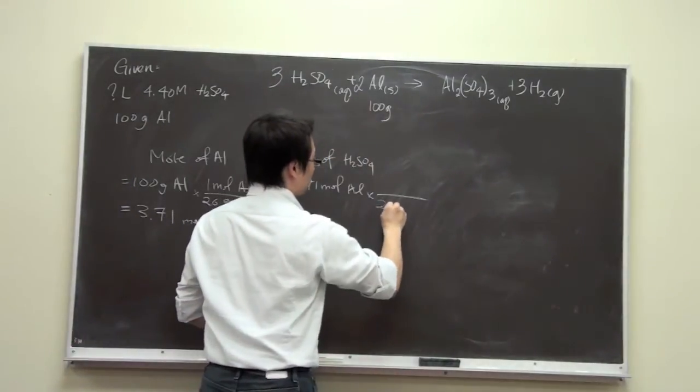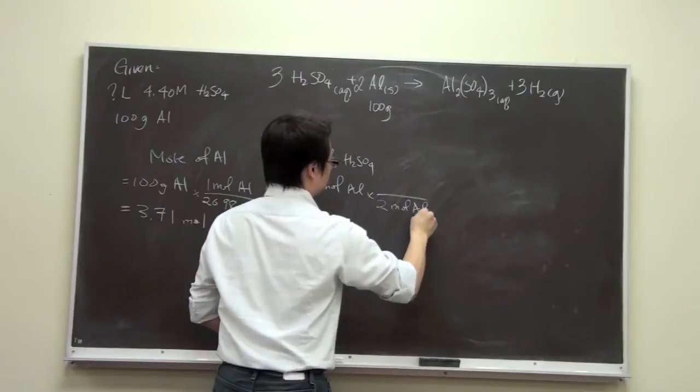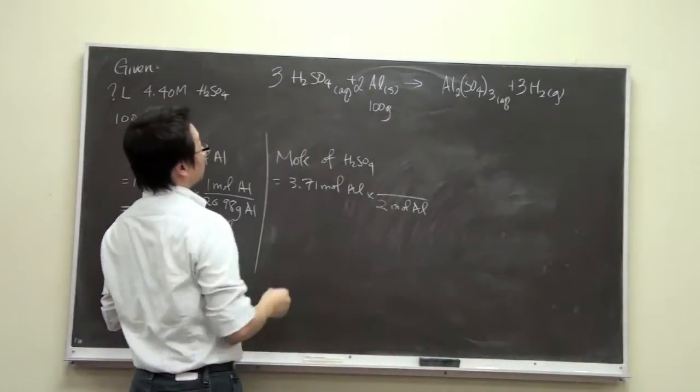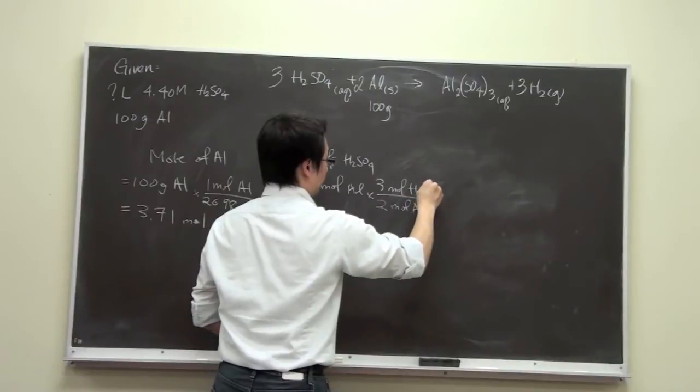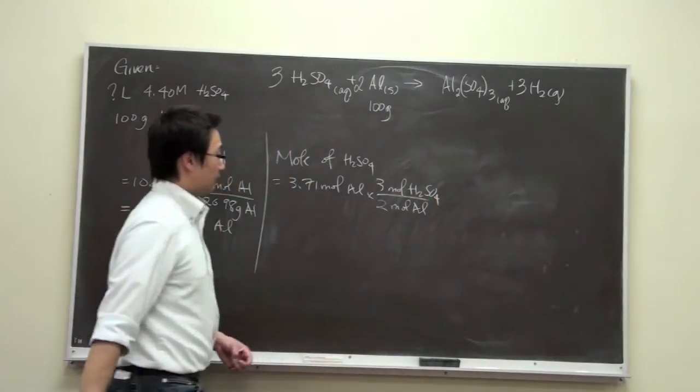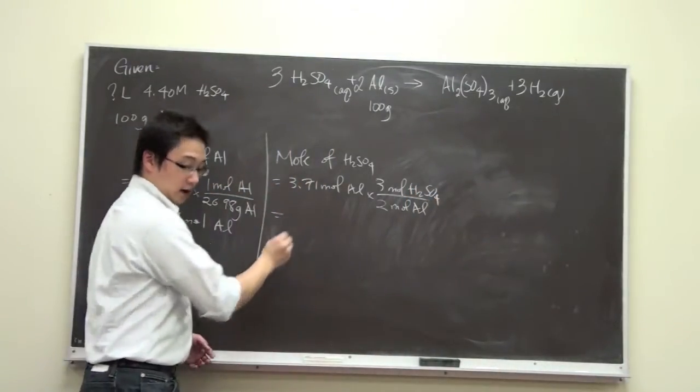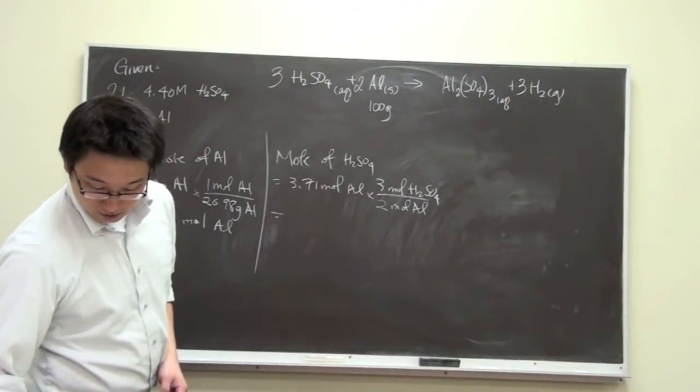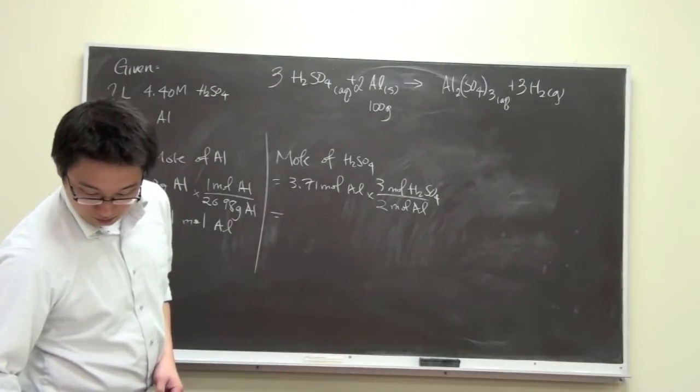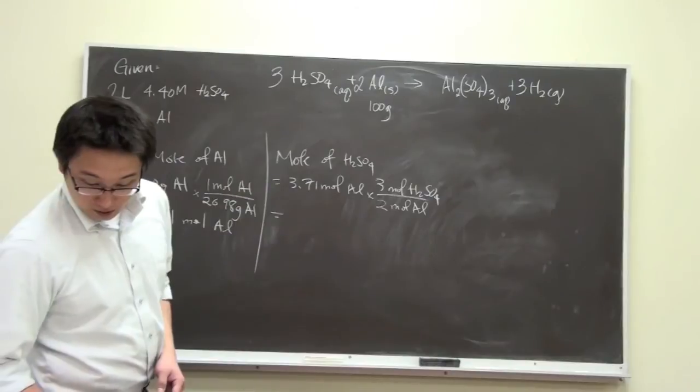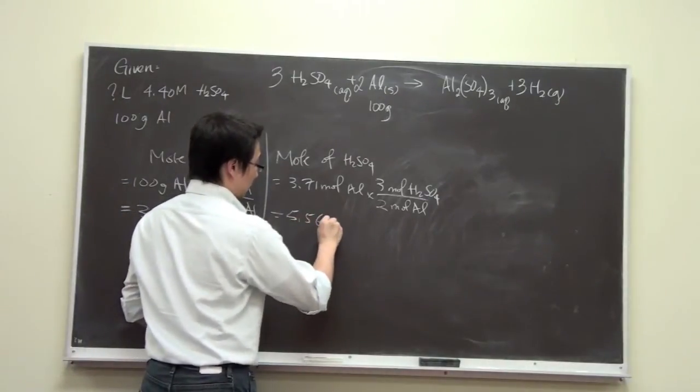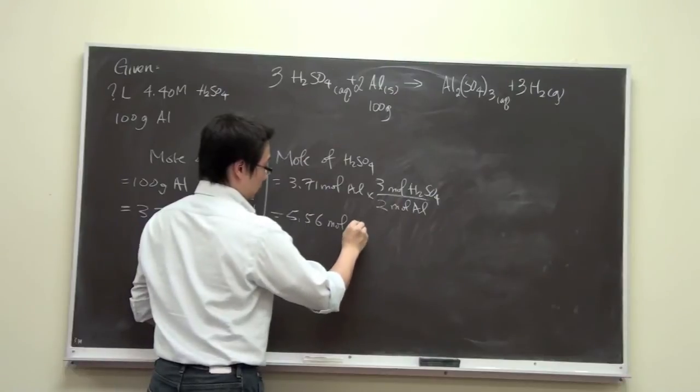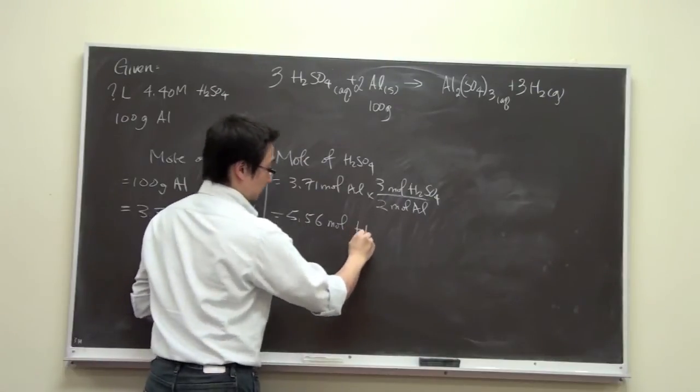We have 2 moles of aluminum to 3 moles of sulfuric acid. And we can calculate, which gives us 5.56 moles of sulfuric acid.